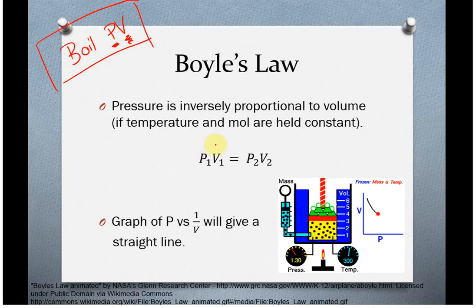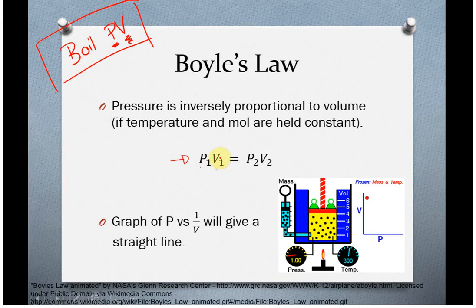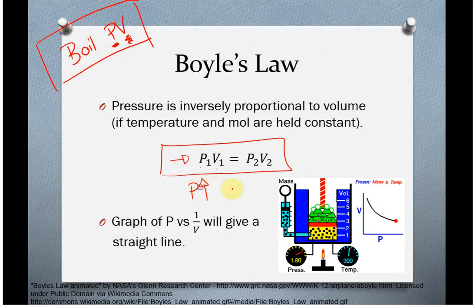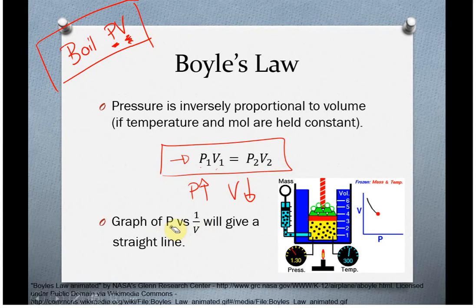We can hold P times V equal to some constant, giving us Boyle's law: P1V1 = P2V2. This means pressure multiplied by volume at one condition equals pressure times volume at a new condition. Inversely proportional means if P goes up, V goes down. The graph of P versus V is curved; the linear relationship is between pressure and 1/volume.